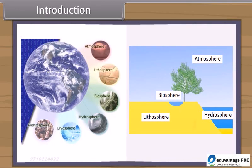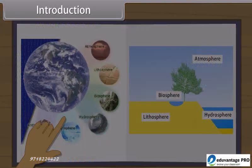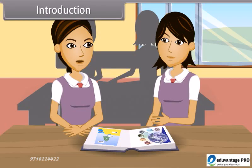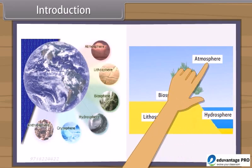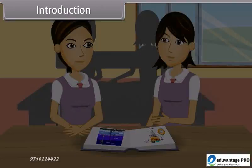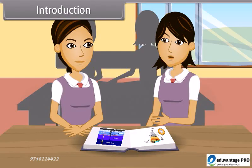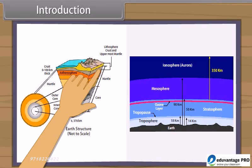Natural resources are components of atmosphere, hydrosphere and lithosphere. The physical part of biosphere is divided into three main groups: lithosphere, hydrosphere, and atmosphere. Lithosphere includes the solid components of the Earth's crust — soil, rock, minerals and other masses.